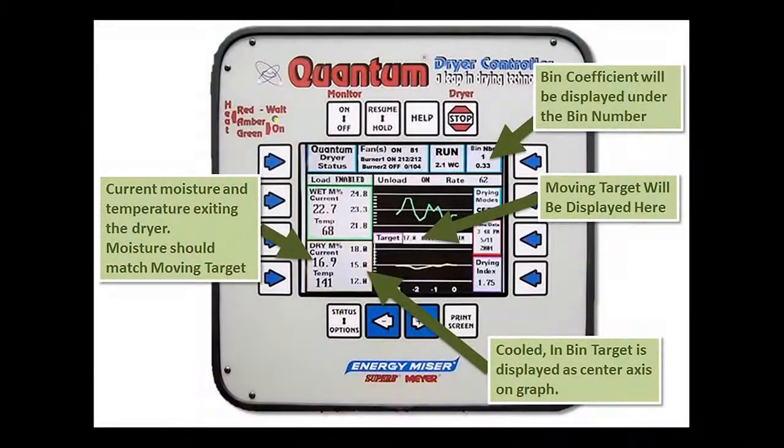The full heat moving target allows the moisture of the exit grain to vary based on the exit temperature of that grain. This will ensure better moisture control when cooling in the bin.